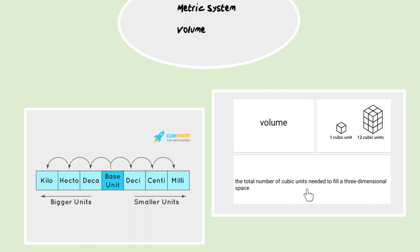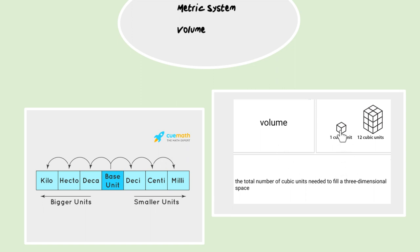For volume, volume is defined as the number of cubic units needed to fill a three-dimensional space. So when we're working with volume, we're working in a three-dimensional unit. Here it's shown we have one cubic unit, and then we have this box, and it would take 12 cubic units to fill up that space.